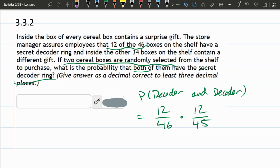And if we got a decoder, there's no longer 12 boxes with decoders. There's one less. There's 11 boxes with decoders. So this is the probability of getting a decoder and a decoder.